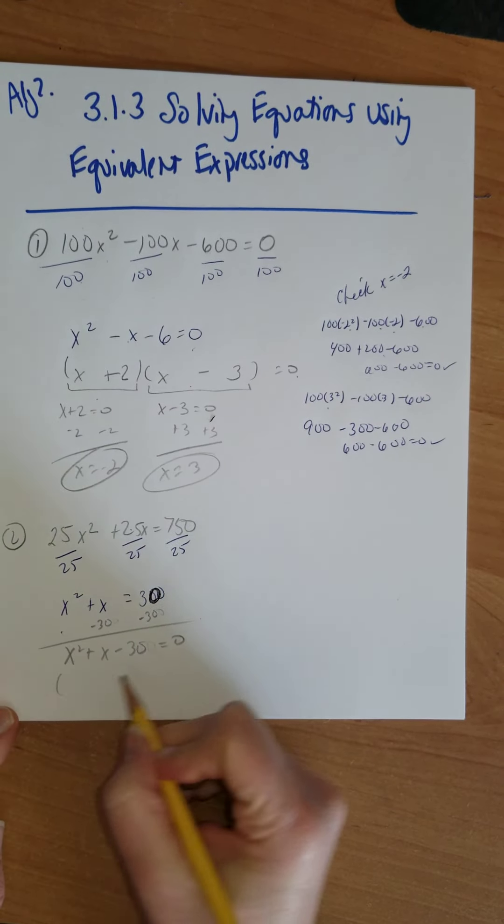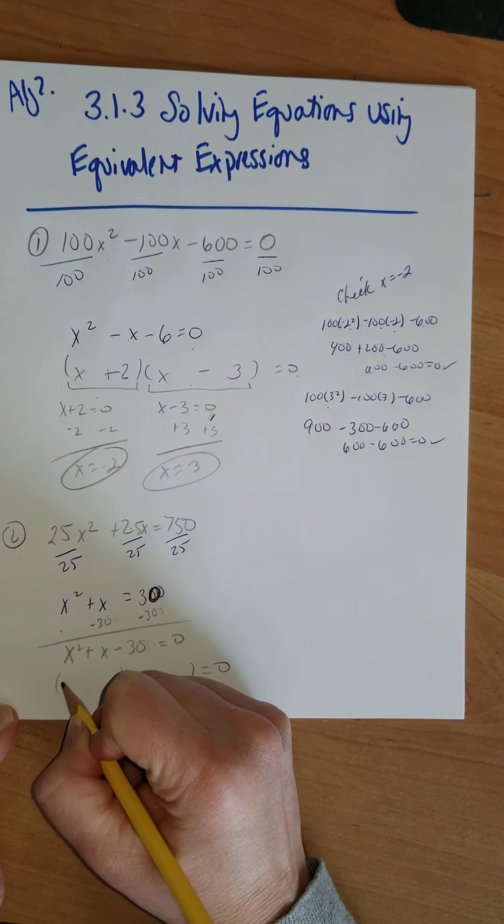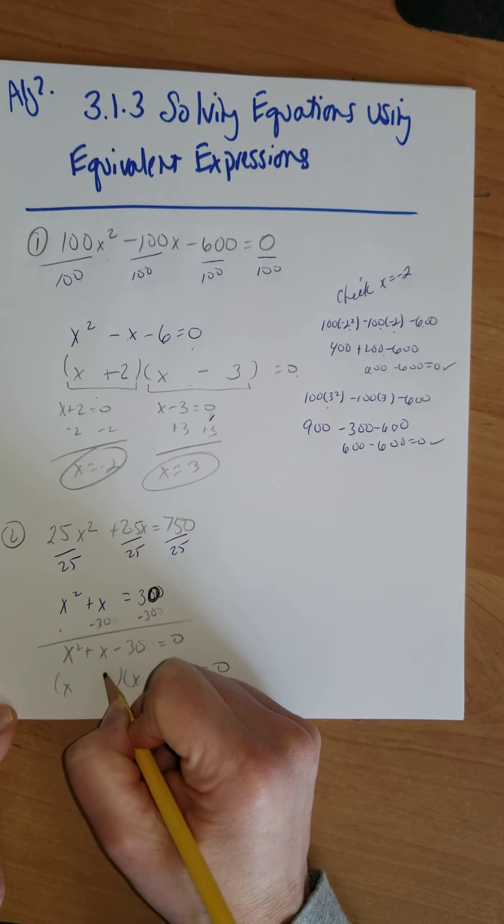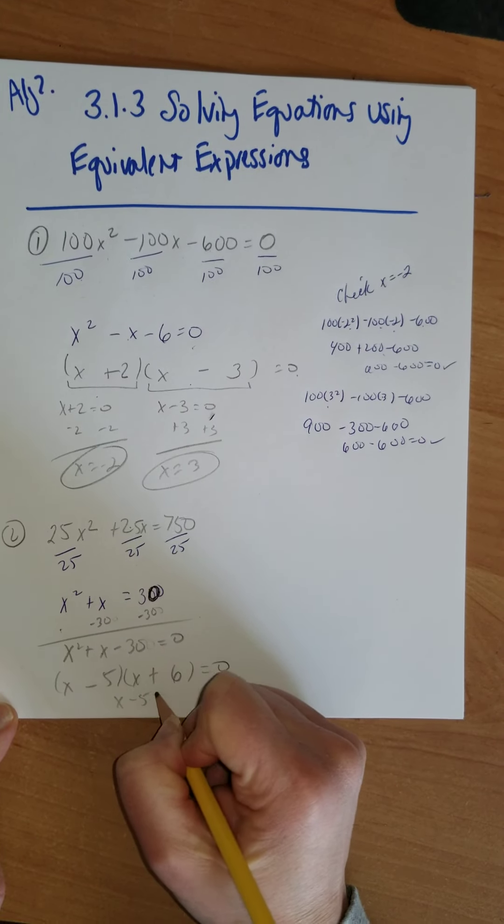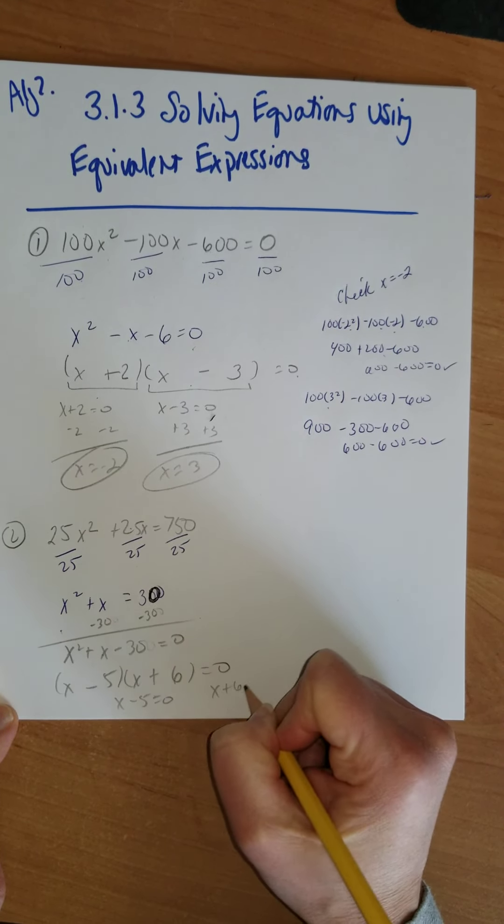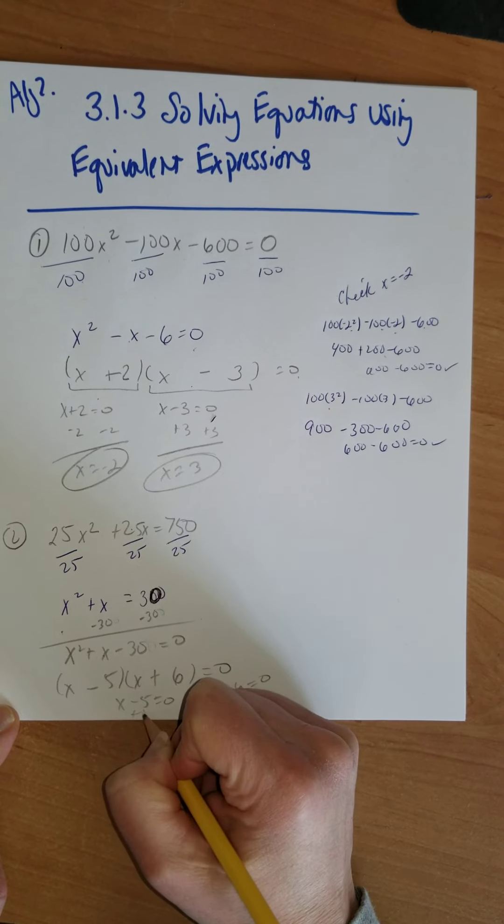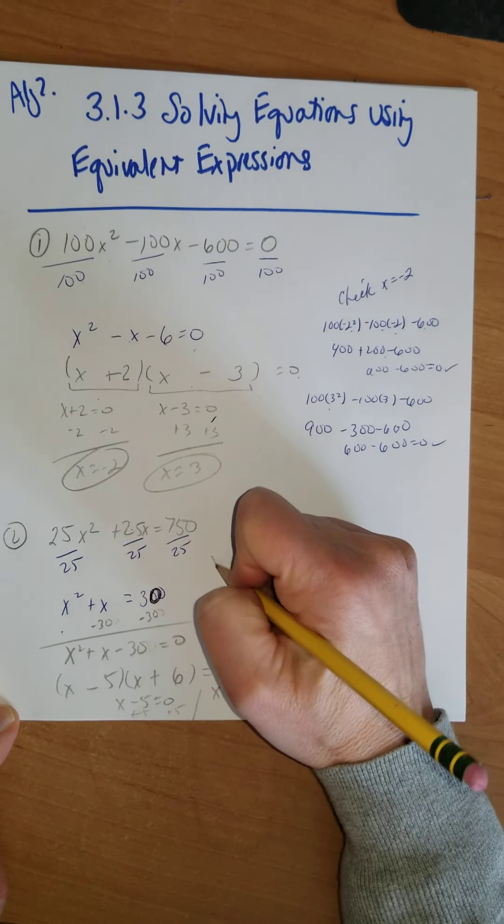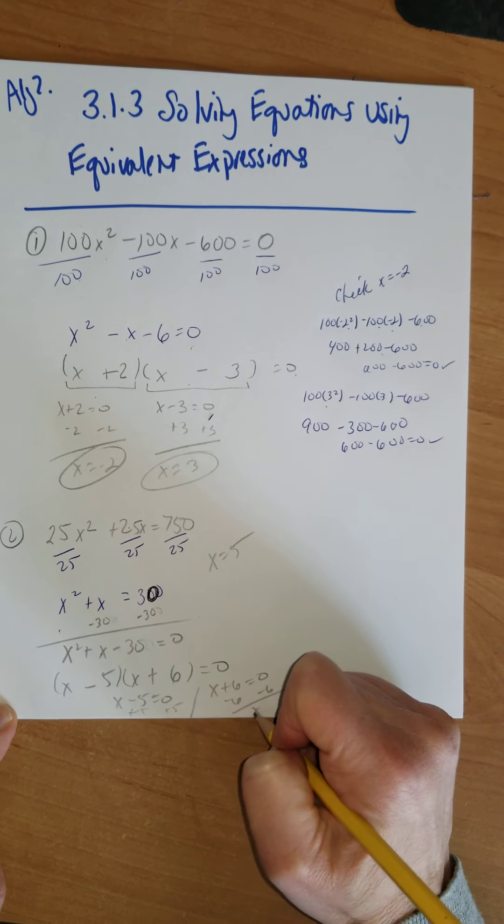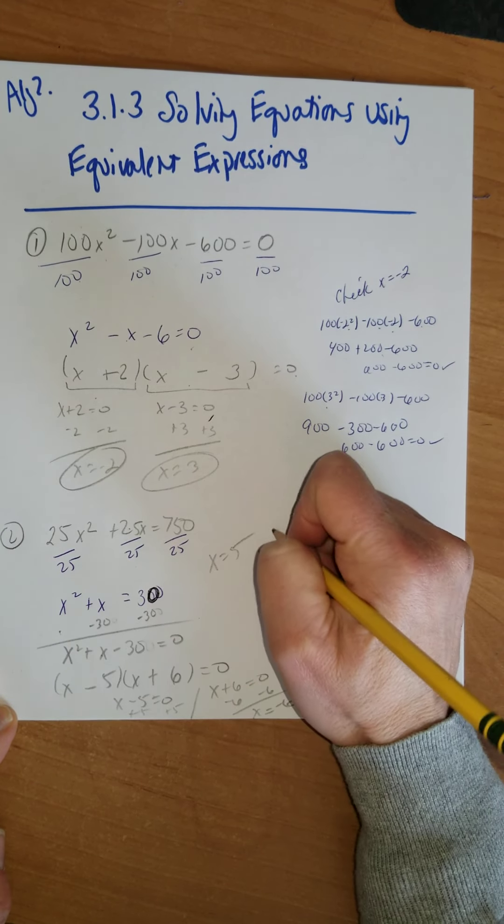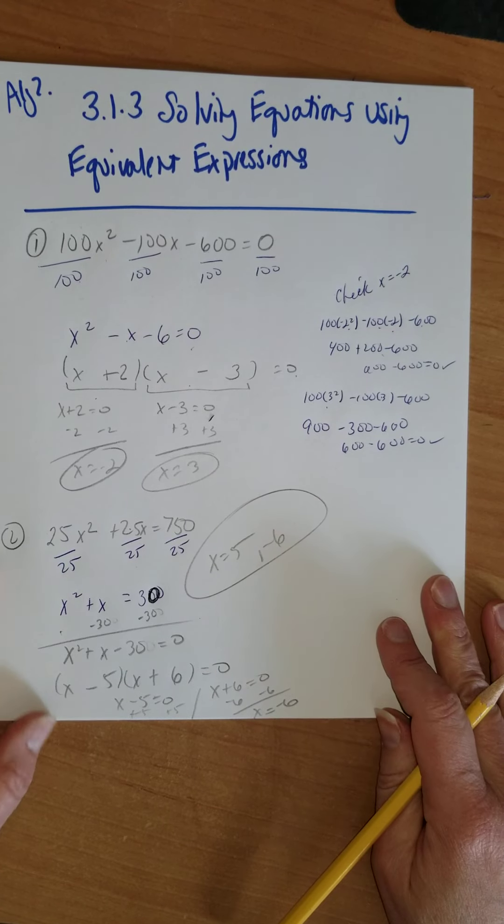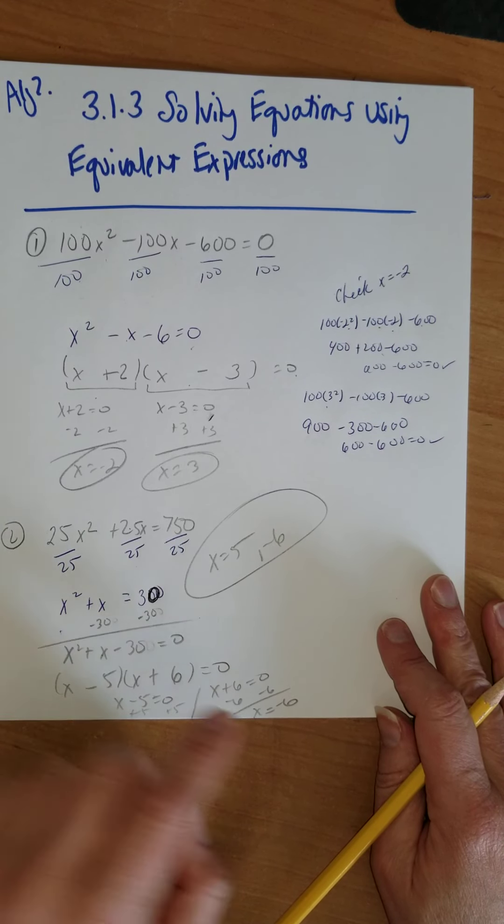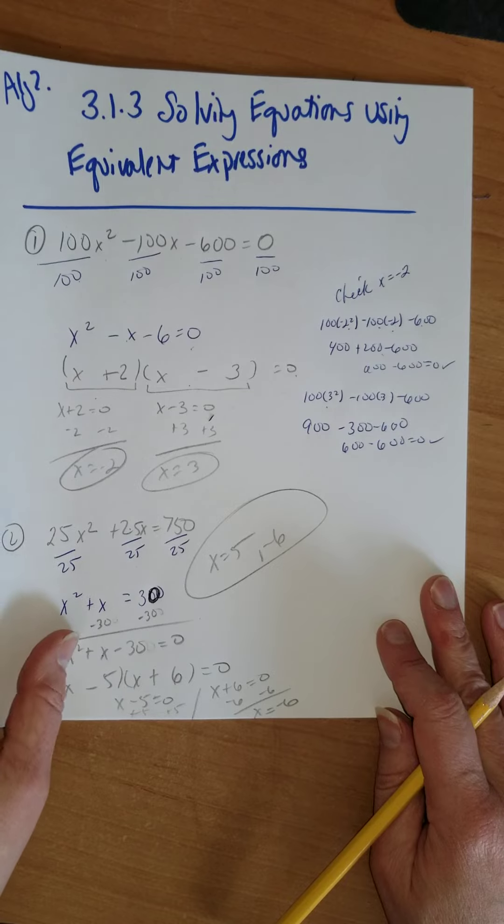So factors of 30 that add or subtract to 1 would be 6 and 5, plus 6 minus 5. So either x - 5 = 0, or x + 6 = 0. We'd add 5, so x would equal 5. And for this one, we'd subtract 6, so x equals -6. When you get it factored, if you want to, you can just leave it. You don't have to do all the equal zero thing if you can do the math in your head.